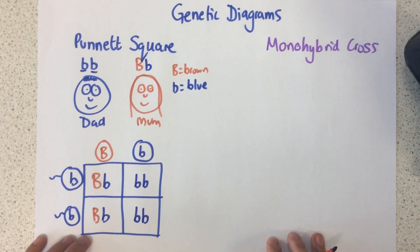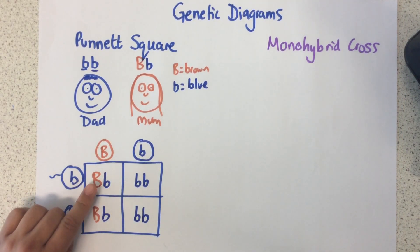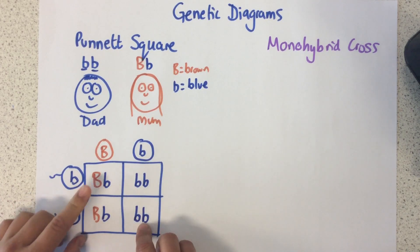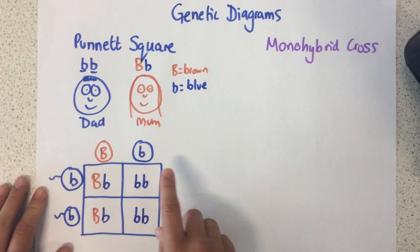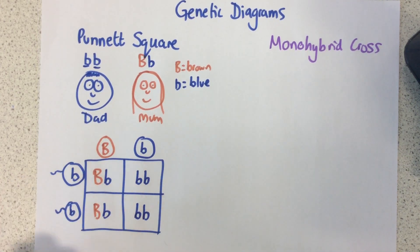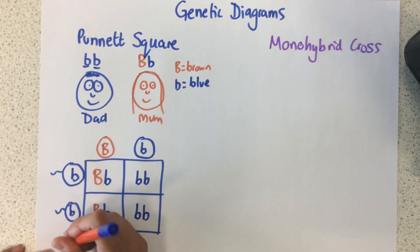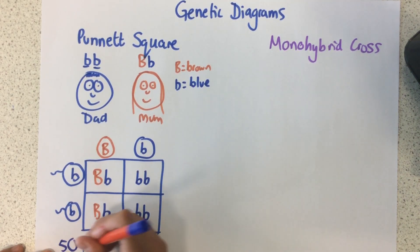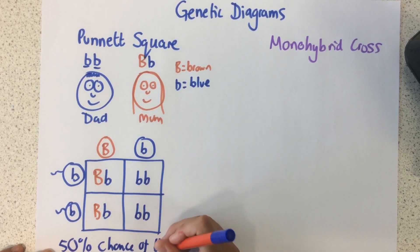So which ones are brown eyes? This child here, because they have that dominant allele for brown eyes, they'd have brown eyes. This child would also have brown eyes. This one would have blue eyes, and this one would have blue eyes. So the percentage chance of blue eyes is 50%.